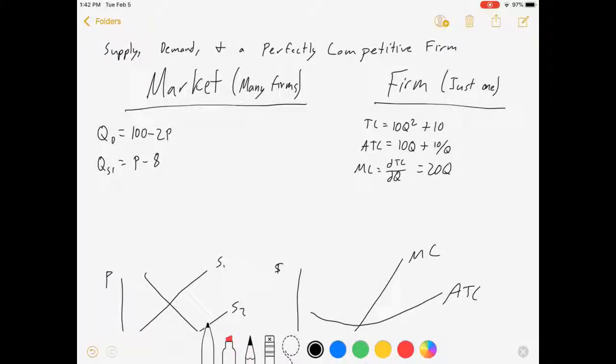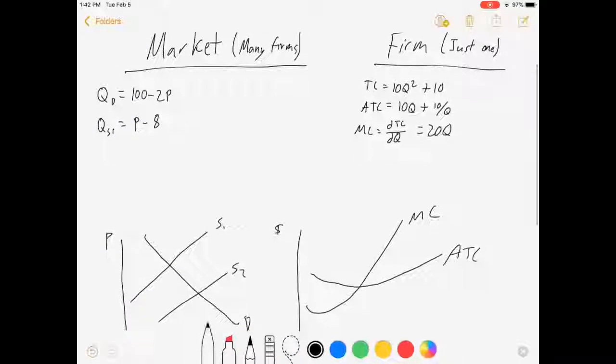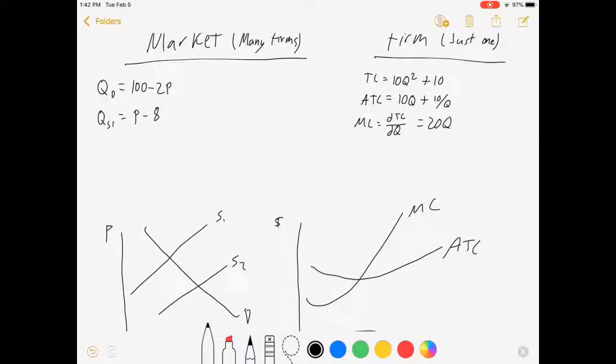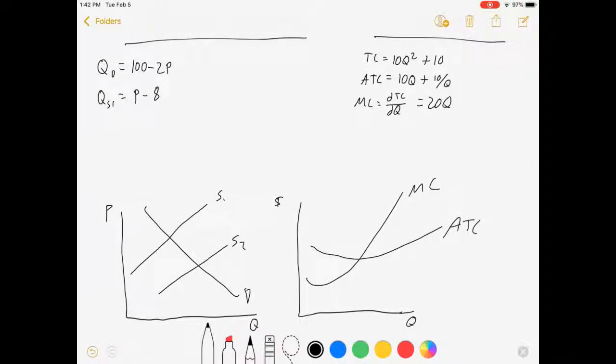Okay, so we're going to see how the market acts as well as how an individual firm will act within that market. And then I'll give a second supply curve in a bit. So if I want to solve for this point, my initial equilibrium, it's straightforward enough. I need to set Qd equal to Qs1, which is 100 minus 2P equals P minus 8, 3P equals 108, P equals 36.